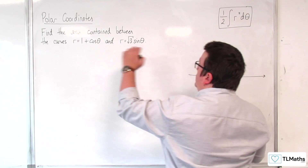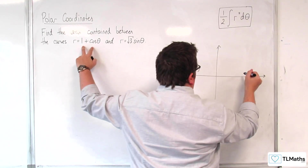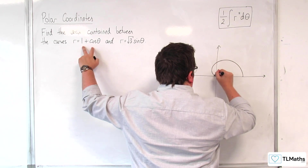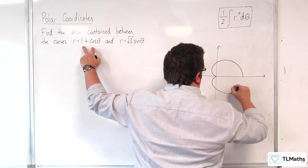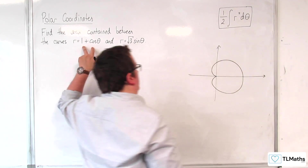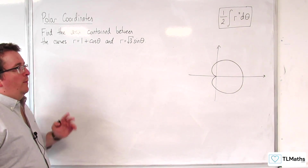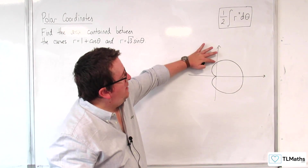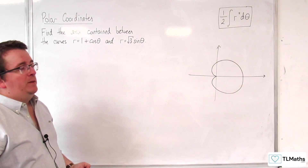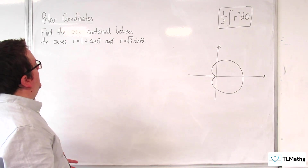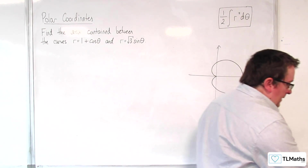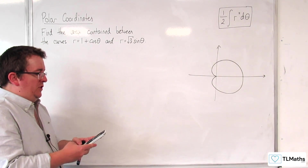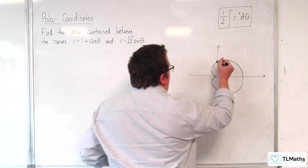Our cardioid r equals 1 plus cosine theta will look something like this. It would be best to identify where that top point is — that's going to be when theta is pi over 2. So 1 plus cosine of pi over 2 gives us 1, so that point is at r equals 1.